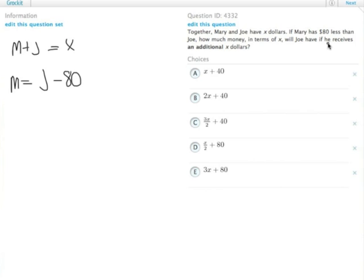Everything though at the end is talking about Joe, so we probably need to figure out what J equals. So if we know that Mary equals J minus 80, we know that how much Mary has plus how much Joe has equals X. So this is 2J minus 80 equals X.